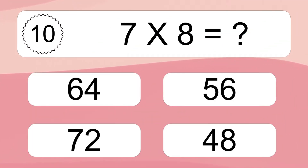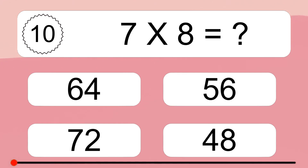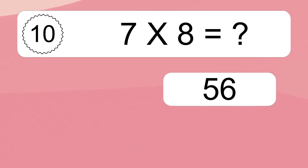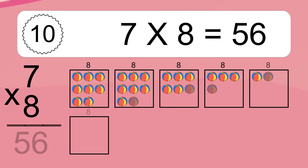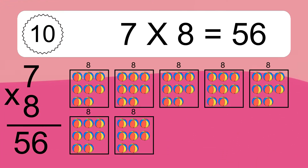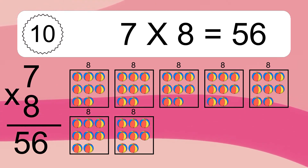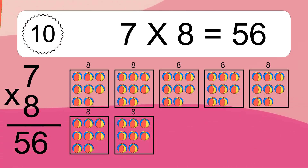Seven times eight equals what? Seven times eight equals 56. We have seven boxes, and each box has eight colorful balls inside. If you count all the balls in all the boxes together, you will have seven times eight balls. This equals 56 balls.